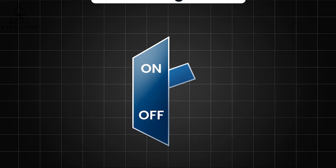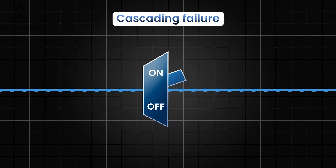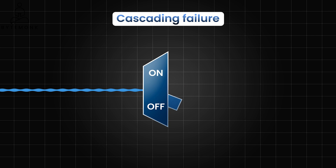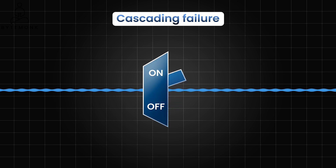Imagine an electric circuit breaker in your home. If there is a power surge or short circuit, the circuit breaker trips, cutting off the power flow to prevent further damage or fire. Once the issue is resolved, you reset the circuit breaker to restore power.